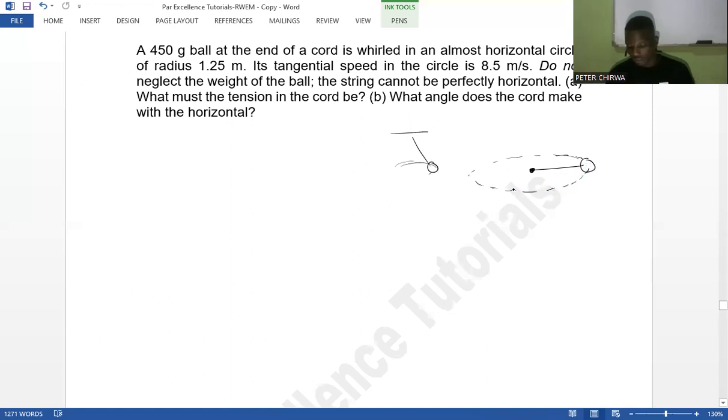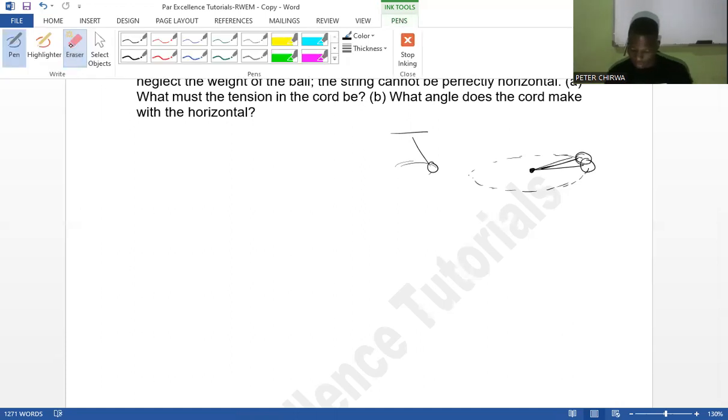In an almost horizontal circle. So you have it like that. Now we need to find... since it's not really horizontal, we need to find... okay, so let me say this bob is there so that you are able to see what I'm trying to mean.